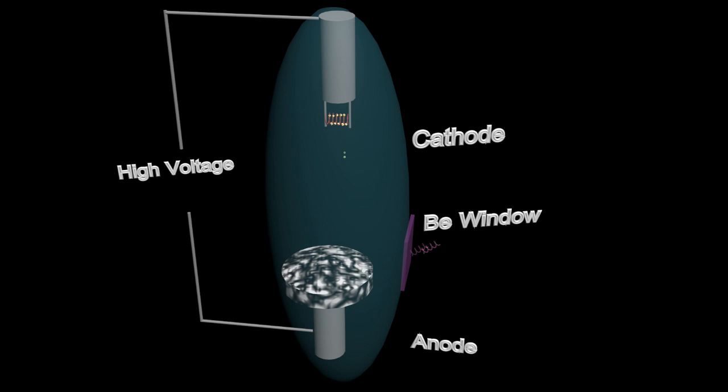Using a rotating anode allows the heat to distribute on a larger surface area, and this allows to generate x-rays with much higher energies and intensities.